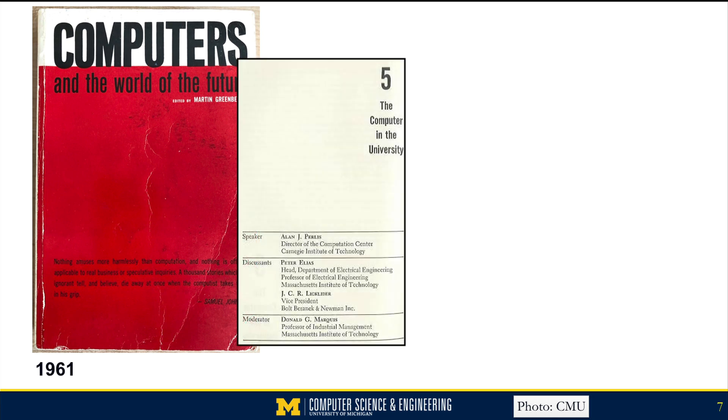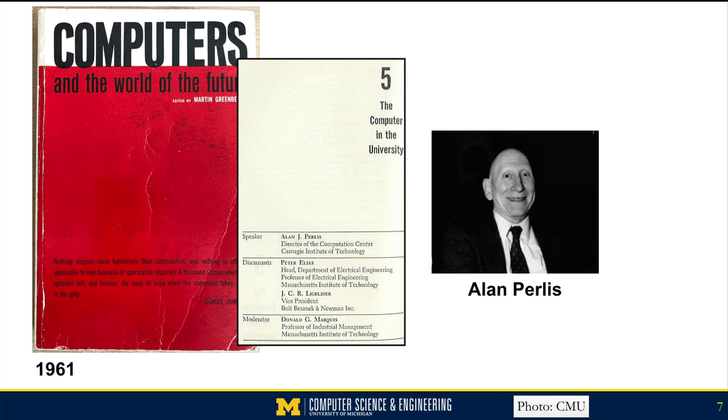One of the chapters was by Alan J. Perlis. He was the lecturer. His discussants were Peter Elias, who was the head of electrical engineering at MIT at the time, and J.C.R. Licklider. If you're not familiar with Licklider, whether you think that Vint Cerf or Al Gore is the father of the internet, it's pretty clear J.C.R. Licklider is the grandfather of the internet. He was the guy who had the idea. When he was at DARPA, he funded the original nodes for the internet.